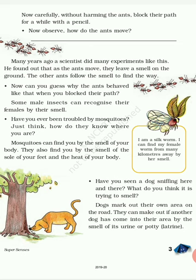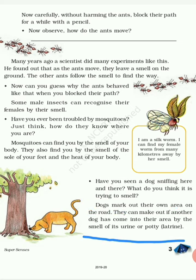Another example of sense of smell is the dog. Have you ever seen a dog sniffing here and there? Dogs mark out their own area on the road. They can make out if another dog has come into their area by the smell of its urine or potty. That is why you usually see dogs doing toilet here and there — they are doing this to mark their areas.